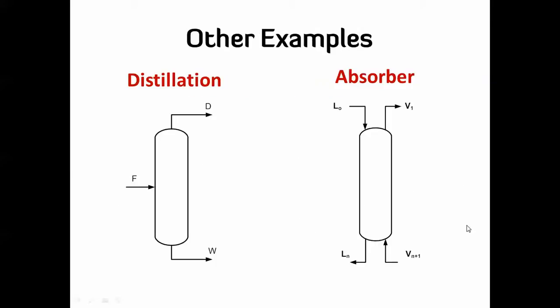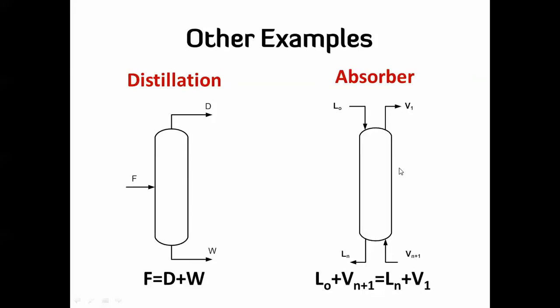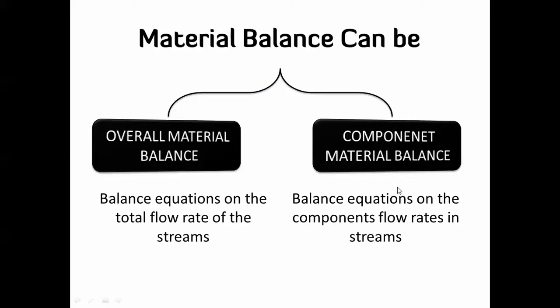The same applies to a distillation column and an absorber. For the distillation column, you have feed, distillate, and bottom product, so F equals D plus W. For the absorber, L(N) plus V(N+1) equals V(1) plus L(N).